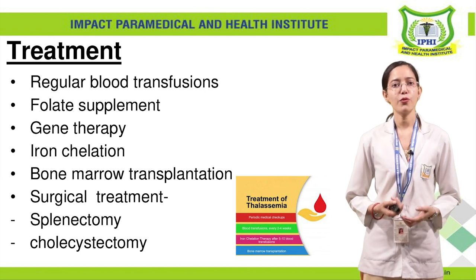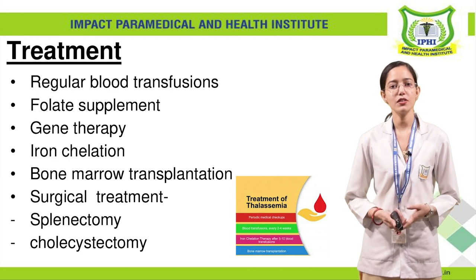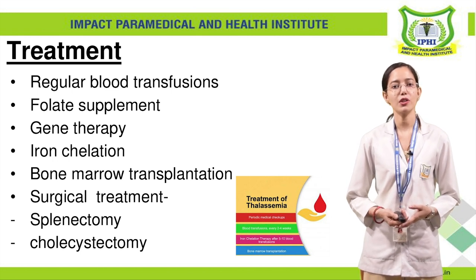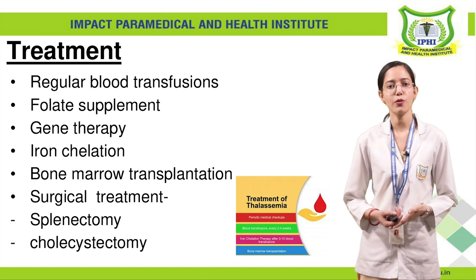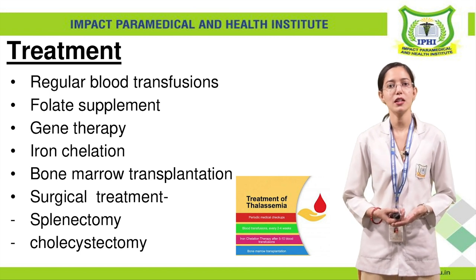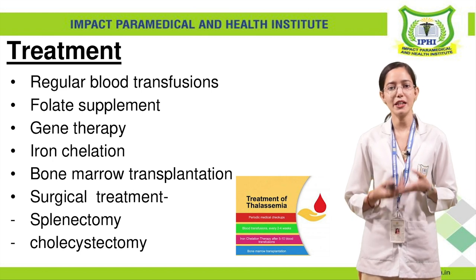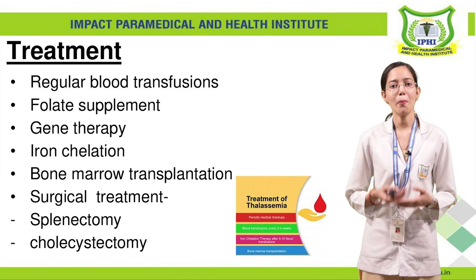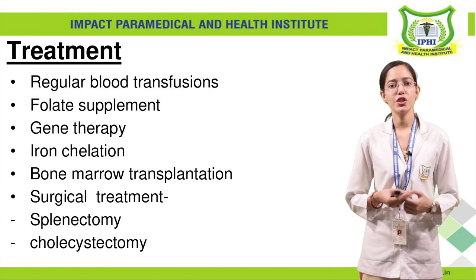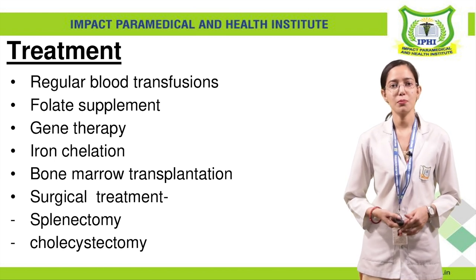Next is folate therapy. In folate therapy, we give folate supplements which help in red blood cell formation. Besides this, we can do gene therapy, in which a particular gene that has an abnormality or variation causing thalassemia can be altered through gene therapy.